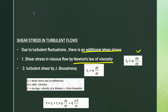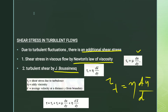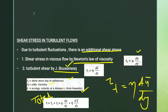A lot of theories can be found with different approaches. For convenience, the first is the Boussinesq theory: turbulent shear stress T is equal to eta into dū/dy, where T is the shear stress due to turbulence and eta is the eddy viscosity. ū bar is the average velocity at a distance y from the boundary. The total shear stress is the sum of viscous shear stress and turbulent shear stress: tau = mu(du/dy) + eta(dū/dy).